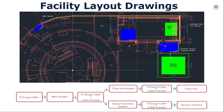The vacuum chamber and clean tent need a power supply. This power will be brought from the break room located northwest of the building, as seen in the facility drawing, where a main breaker for these two pieces of equipment — represented as a pink box in the breaker room — will be installed. A 12-gauge cable in its cable conduit will then connect the main breaker to each individual breaker, one for the clean tent and one for the vacuum chamber. These cables will be placed on a cable tray currently in place along the walls of the building. The routes of the cables are indicated by the yellow lines on the facility layout drawings. The individual breakers, represented by pink boxes, will be placed right next to their respective piece of equipment and connected to it by a shorter cable, represented by blue lines.